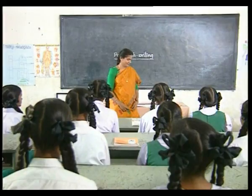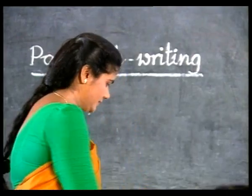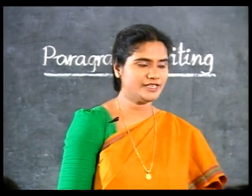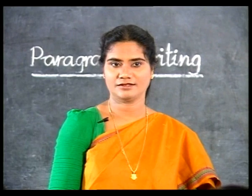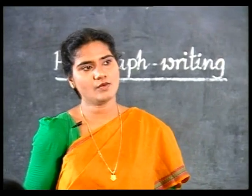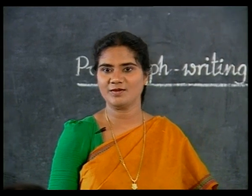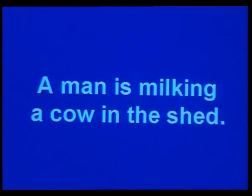Now look at yet another picture. What do you see here? A man — what is the man doing? He is milking the cow. Where is the man? He is in the shed. Now with the help of these words, frame a sentence. The words are: man, milking, cow, shed. A man is milking a cow in the shed.